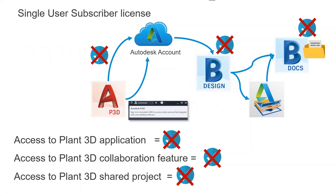Just to touch on it — we're talking about single-user subscriber licenses. If you're a subscriber trying to use Collaboration for Plant, there are a few gates you need to get through — kind of that Swiss cheese effect — and if they don't all line up, it can be a little bit difficult. The first one is needing to be licensed for the Plant3D application.